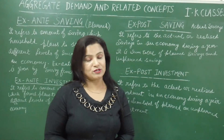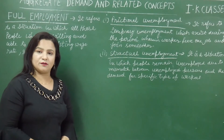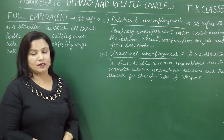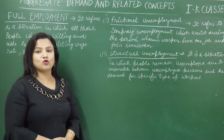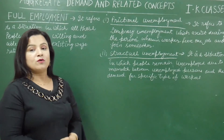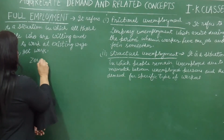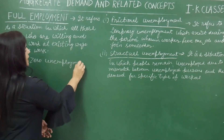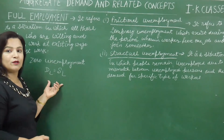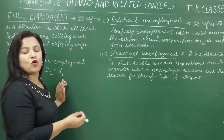These terms — ex-ante savings, ex-post savings, ex-ante investment, and ex-post investment — can be asked in MCQs and short answer type questions, so do them very well. Now I am talking about employment and unemployment situations. Full employment refers to a situation in which all those people who are willing and able to work at the existing wage rate get work. There is zero unemployment in the economy, and demand for labor is equal to supply of labor.